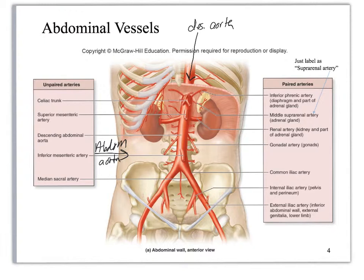The very first thing I want you to notice is this trunk right here — this is your celiac trunk. It's got three branches, which we're going to look at in a little bit. You can see them coming off: one, two, three. It's pretty much the first anterior vessel that's going to split off of the aorta after you go inferior to the diaphragm. You can also see the suprarenal arteries, which are going to the suprarenal gland, which most of the time we just call the adrenal gland.